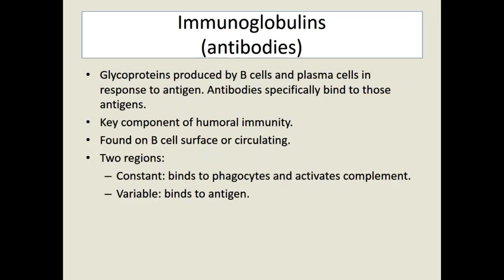Antibodies, or immunoglobulins, are glycoproteins made by B cells and plasma cells in response to an antigen. These immunoglobulins are part of the plasma proteins — made not by the liver but by cells in the lymph nodes. When someone has liver failure, they'll have low levels of liver-made proteins like albumin and clotting factors, but immunoglobulin levels will remain normal.